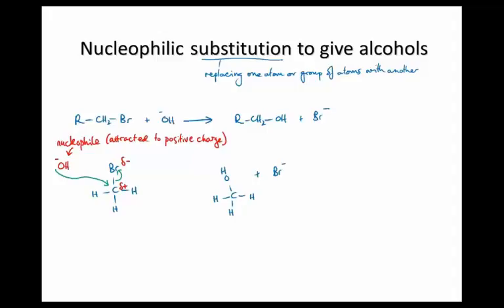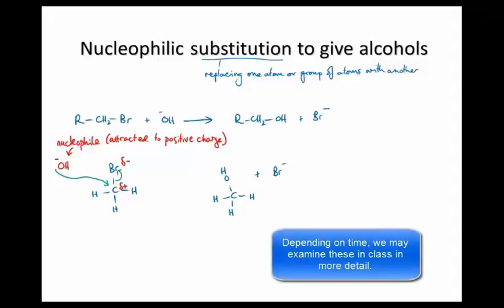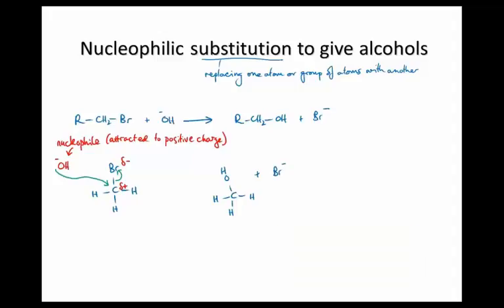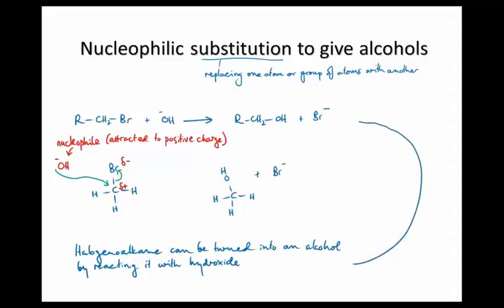Your text goes into more detail about this reaction involving mechanisms called SN1 and SN2. Overall, the thing you need to know is that a halogen alkane can be turned into an alcohol, and that's the generic reaction right there.